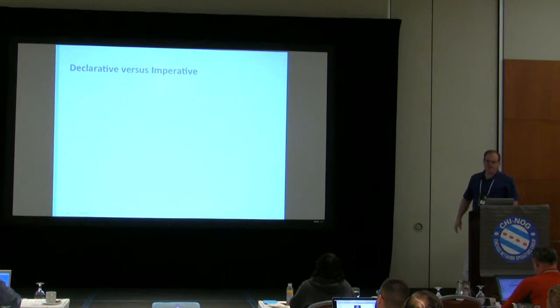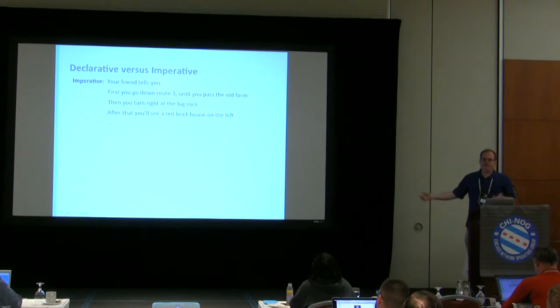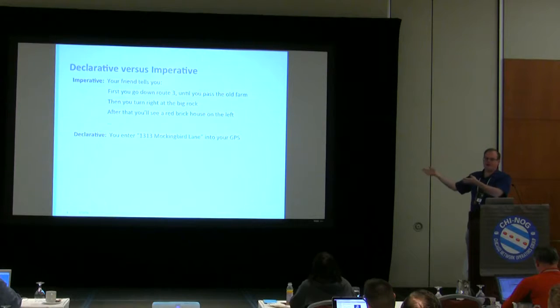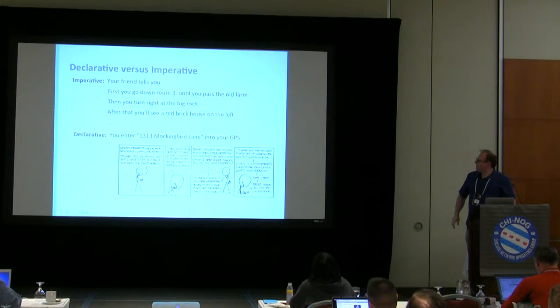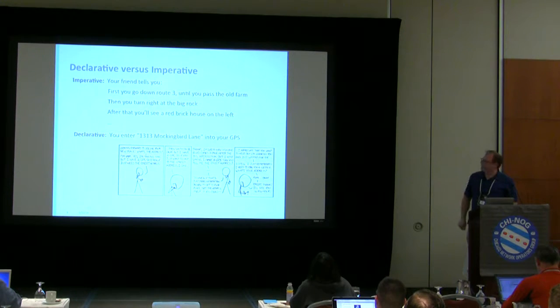I want to drive home this idea of declarative versus imperative. If you ask your friend how to get to his house and he starts giving you turn-by-turn directions — go down Route 3, turn by the old barn — that doesn't work. Instead, what you want is just his address: put it in the GPS and it gets you there. You just declare what you want to do, and it helps you get there. There's also the obligatory XKCD reference, though there's way too much text to read here.